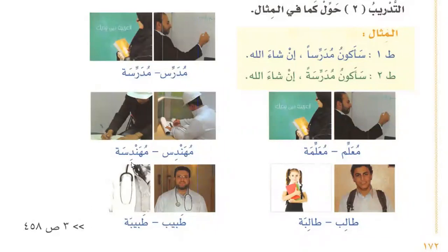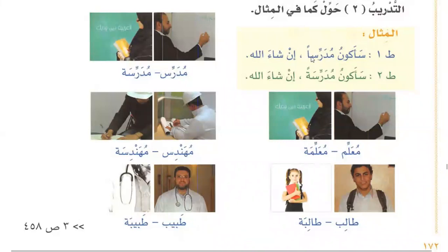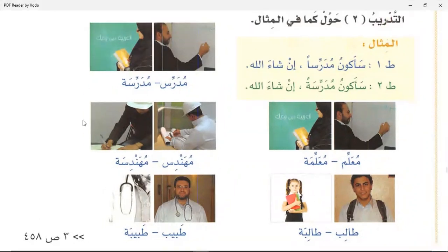Bring sentences like the one in the example. Sa-akunu mudarrisan inshallah — I will become a teacher, inshallah. Whenever we have two fatha with a masculine word, we use an extra alif at the end, just like 'mudarrisan'. When we have tanwin fath, we use an extra alif with masculine words. Who wants to make these sentences?